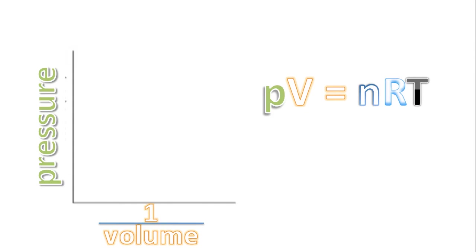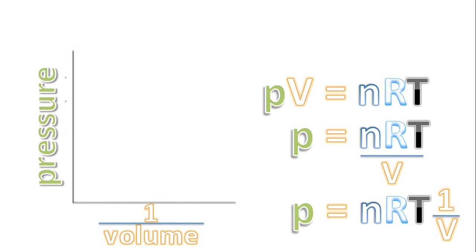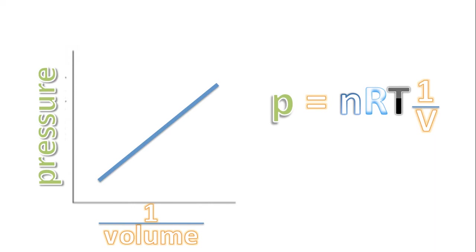Well, going back to our ideal gas law and rearranging it to isolate for pressure. And now I just want to write it like this, because it's going to be easier to see something in a moment. Writing the equation like this, ultimately your data is going to produce a linear equation. Why is that?